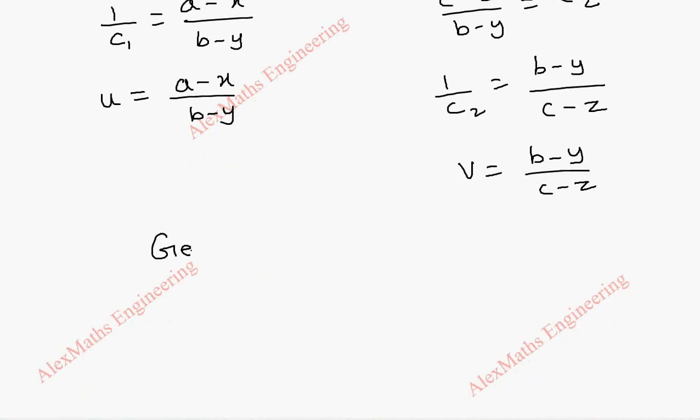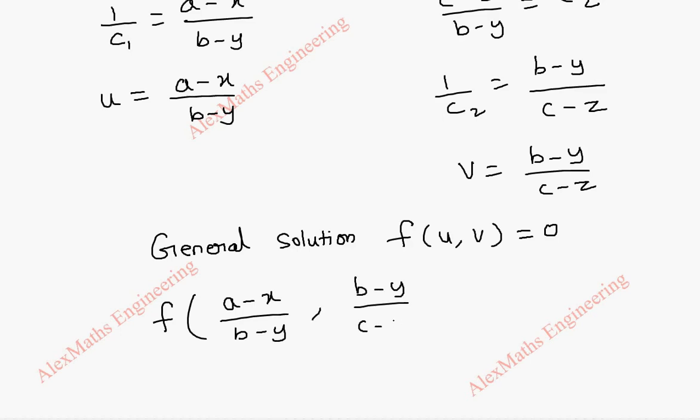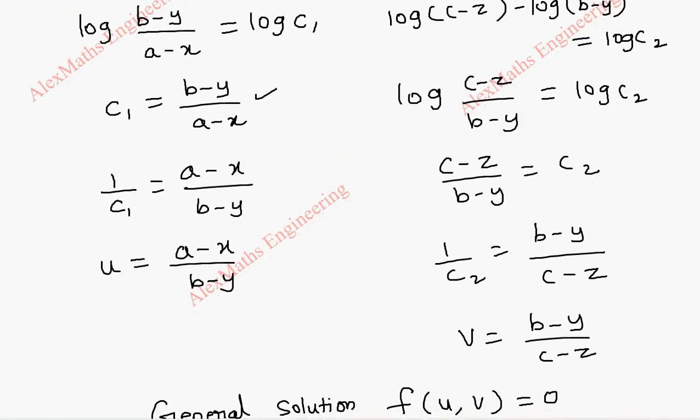Now finally, our general solution is F of U comma V equal to 0. So F of A minus X by B minus Y comma B minus Y by C minus Z equal to 0.